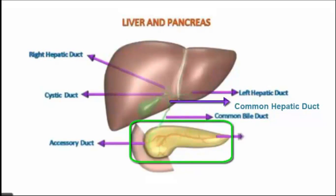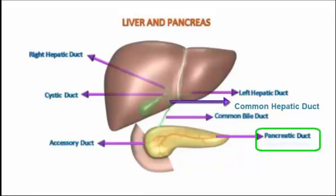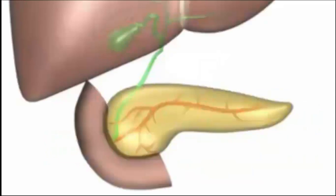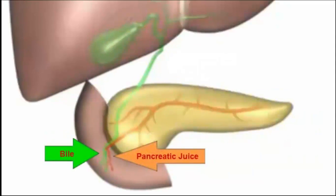The pancreas is the second largest gland and pancreatic juice is carried by two ducts. The main pancreatic duct is called the duct of Wirsung, and the accessory duct is called the Santorini duct. The Santorini duct opens directly into the duodenum, whereas the duct of Wirsung combines with the common bile duct to form the hepato-pancreatic ampulla. The opening of this ampulla is guarded by the Sphincter of Oddi, which regulates the flow of bile and pancreatic juice into the duodenum.